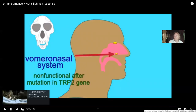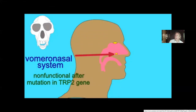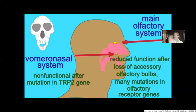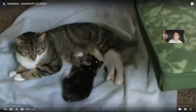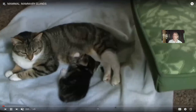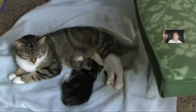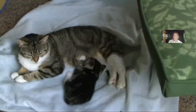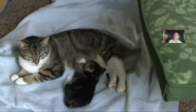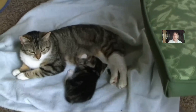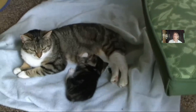Even though the vomeronasal organ doesn't work anymore, apparently our main olfactory system still picks up on some pheromones, as it does have some role in humans. There are psychology tests showing that inhaling pheromones of one class or another can change your mood or responses. Apocrine sweat glands produce proteins and lipids onto the surface of the body that microbes then change. Mammals took apocrine sweat glands and made some produce even more lipids and proteins — and this was the origin of mammary glands.